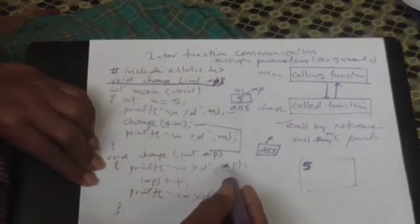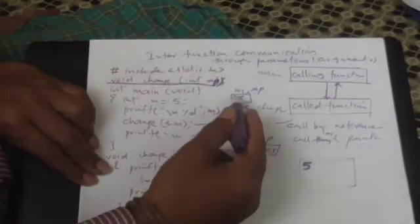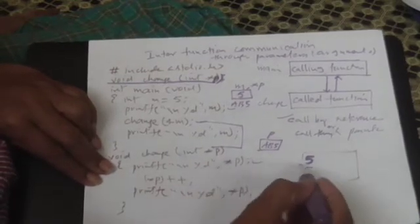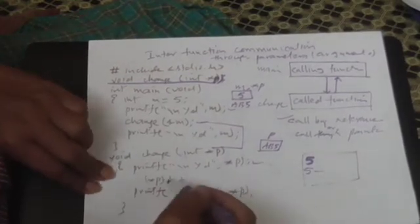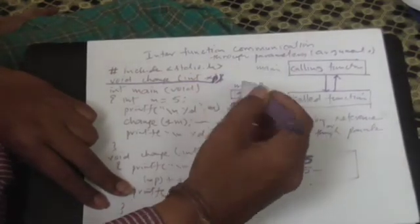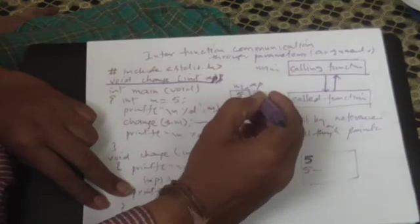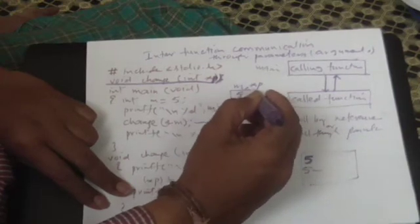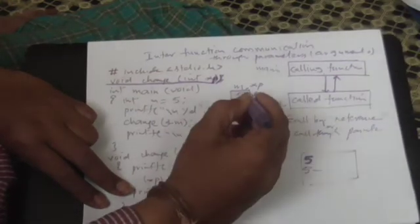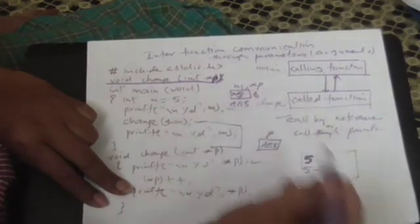Then you said printf percentage d asterisk p. The value of asterisk p is 5 here. So this is done. And you said asterisk p plus plus. So this is changed now. Whatever 5 was there has become 6 now.